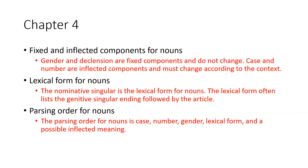Lexical form for nouns: the nominative singular is the lexical form for nouns — for example, 'logos.' The lexical form often lists the genitive singular ending followed by the article, so you might see 'logos, -ou, ho.'